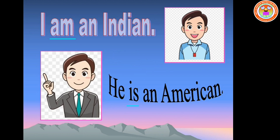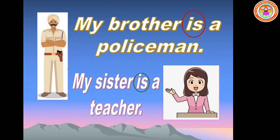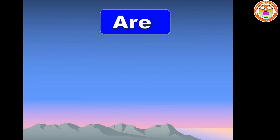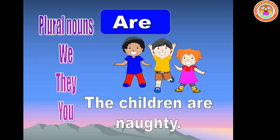We use be verb to talk about nationality. Example: I am an Indian. He is an American. We can use be verb to talk about a person's job or profession. Example: my brother is a policeman. My sister is a teacher. Are is used with plural subject or plural pronouns. The plural pronouns are we, they, you.